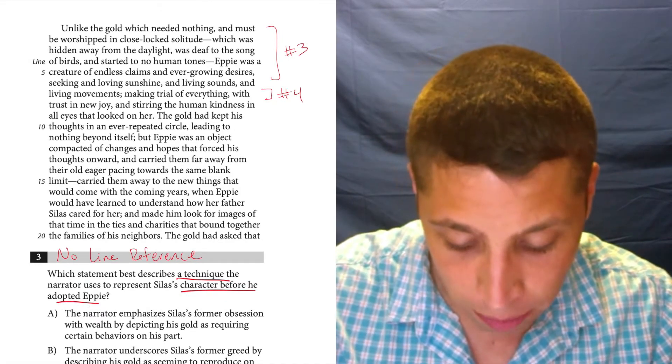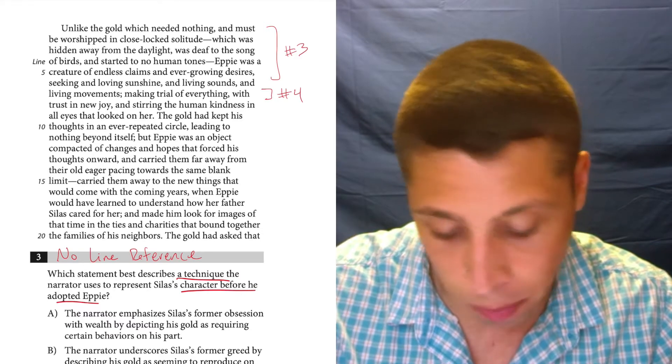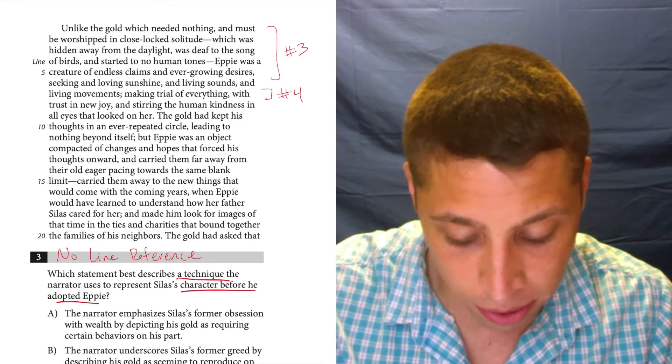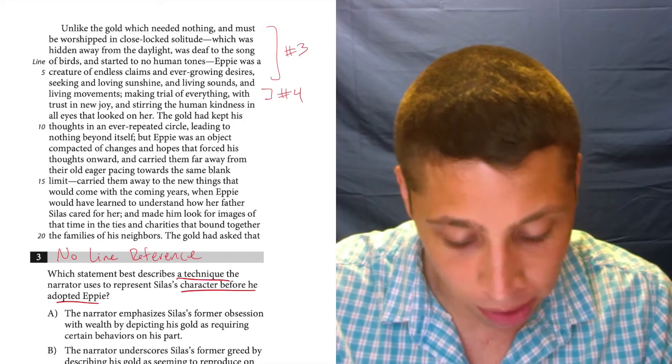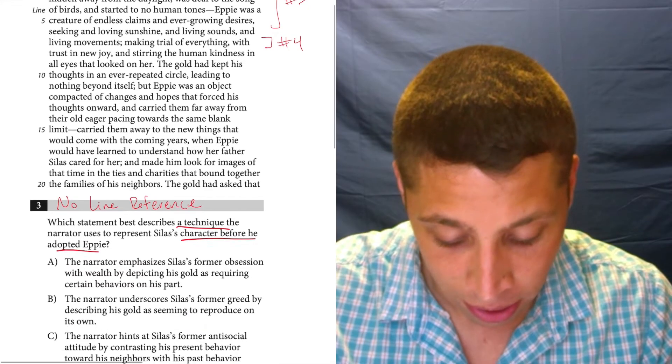Unlike the gold, which needed nothing and must be worshiped in closed locked solitude, which was hidden away from the daylight, was deaf to the song of birds and started to know human tones. Epi was a creature of endless claims and ever-growing desires, seeking and loving sunshine and living sounds and living movements, making trial of everything with trust and new joy and stirring the human kindness in all eyes that looked on her.